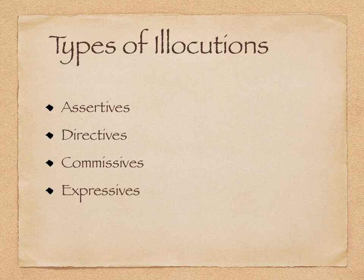Then we have expressives — utterances in which the speaker expresses feelings and attitudes, shares what the feelings and attitudes might be. And then there are declarations. These are the kinds of utterances that actually bring about changes through the utterances themselves. We already saw the example of the wedding: 'I now pronounce you husband and wife.' That's a declarative type of illocution where reality has changed simply because of that declaration. Where there was previously no married couple, following that declaration, there is a married couple.